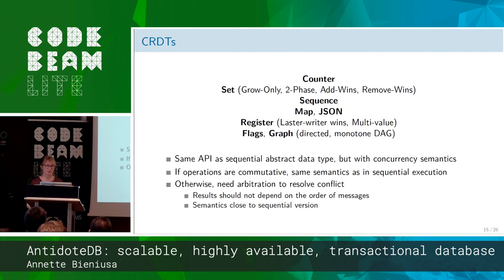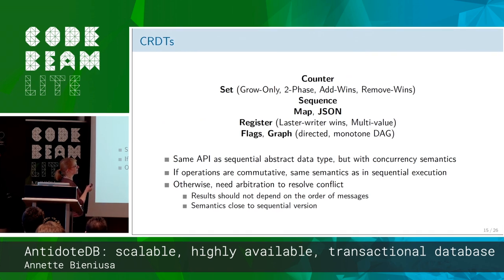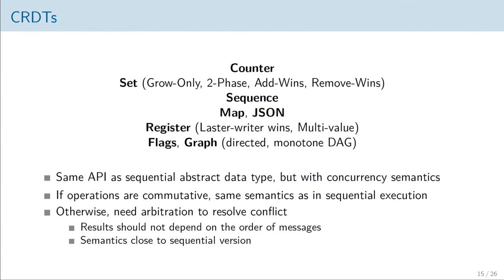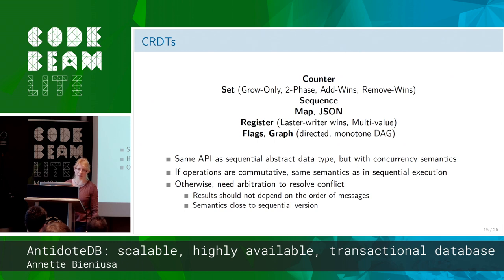Let's start with CRDTs. For those who have never heard about CRDTs — it's an abstraction of data types. So instead of just key-value, the value stored under a key will be of a specific type: a counter, a set, a sequence, a map, registers, or graphs. You don't interact with a data type by just reading and writing, but by applying operations. A counter you can increment and decrement; for a set, you can add and remove elements. CRDTs give you a guarantee that if all operations on the data type are commutative, you will get the same semantics as the corresponding sequential abstract data type.